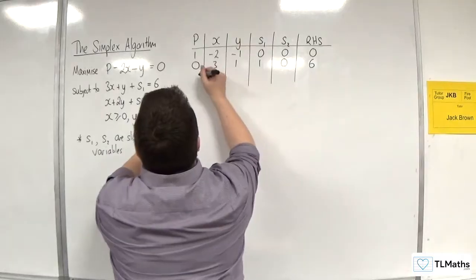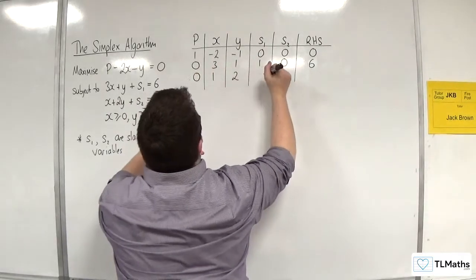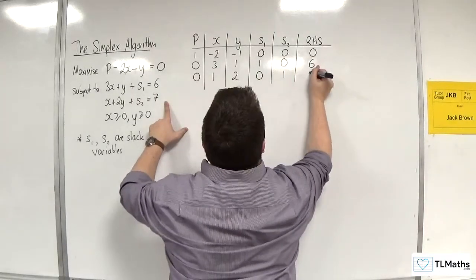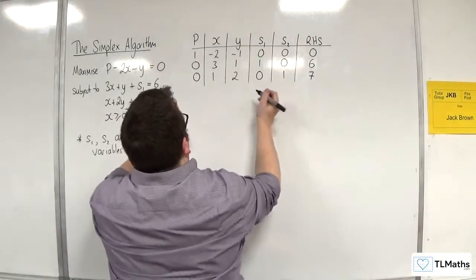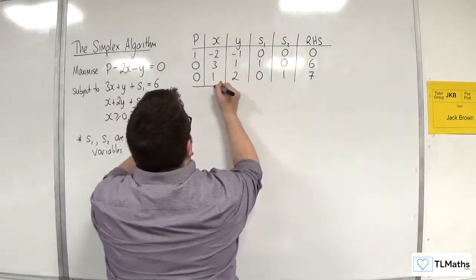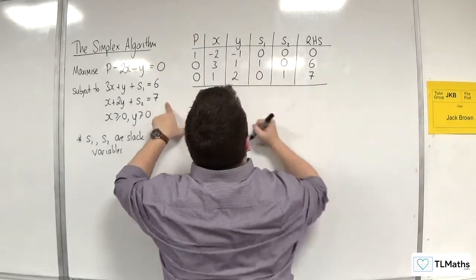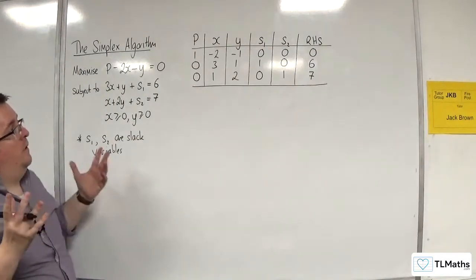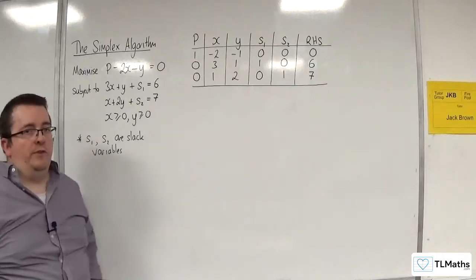Then for the second one, you've got zero Ps, one X, two Ys, zero S1s, one S2s, and seven. And so that is the initial tableau. That's how we set it up, working from our constraints into the initial tableau.